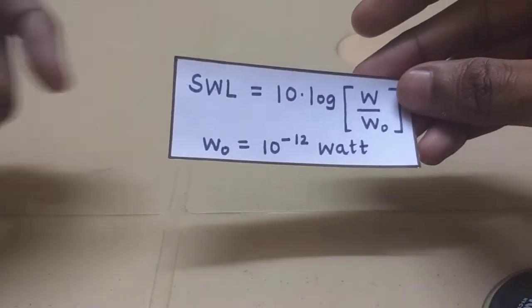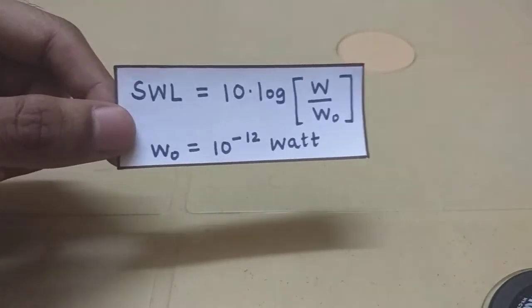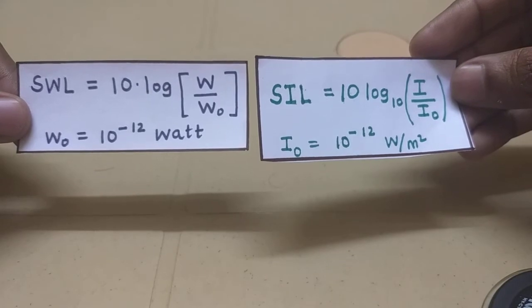Sound power level is given by this equation where W0 represents the reference power and sound intensity level is given by this equation where I0 represents the reference intensity.